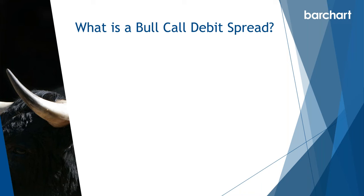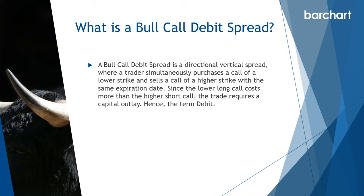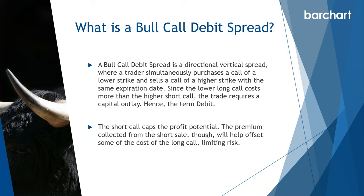What is a bull call spread? It's a vertical spread, meaning we have two strikes where one is below the other. We buy the lowest strike and sell the highest strike of the same expiration date. Because the lower call always costs more than the higher call, we incur a cost — hence the term debit. Selling the higher call caps our profit potential, though it helps to offset the cost of the lower call, thereby limiting our dollar risk.